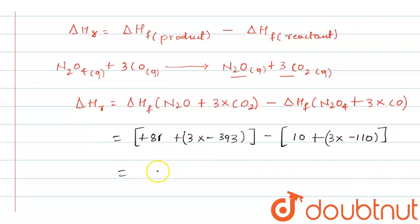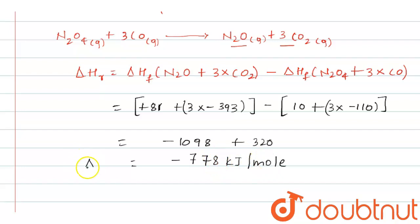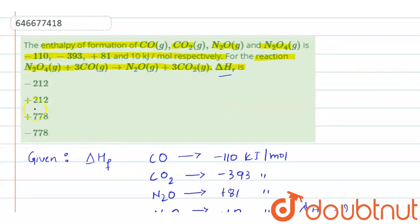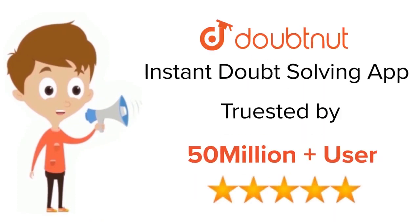Solving this, we get minus 1098 plus 320, which gives minus 778 kilojoules per mole. So the enthalpy of reaction is minus 778 kilojoules per mole. Looking at the options: option A is minus 212 — no; option B is plus 212 — no; option C is plus 778 — no; it is minus 778, so option D is the correct answer.